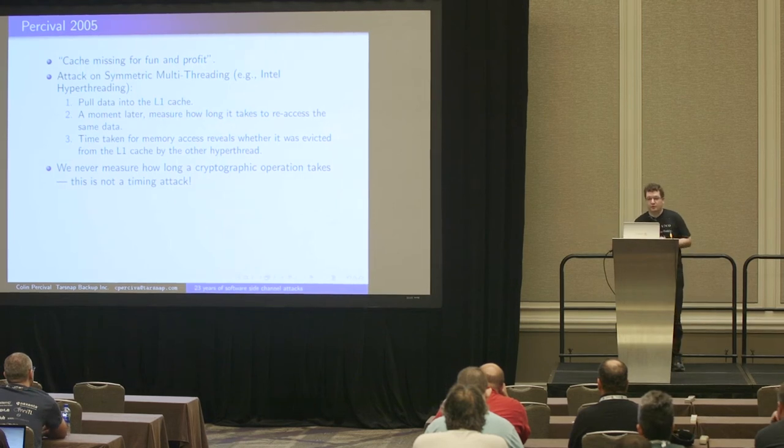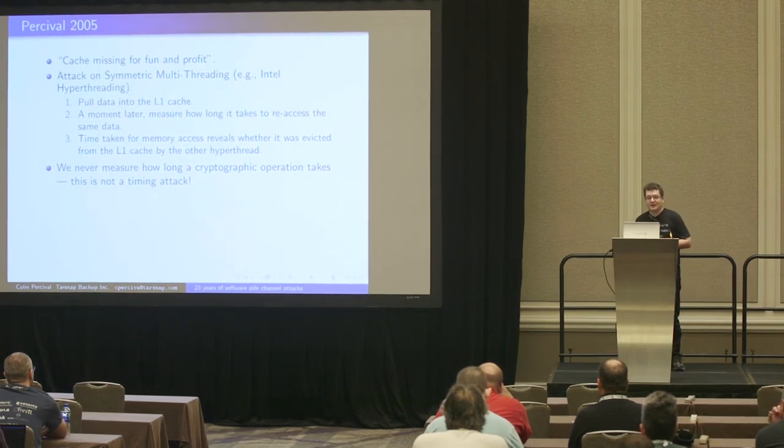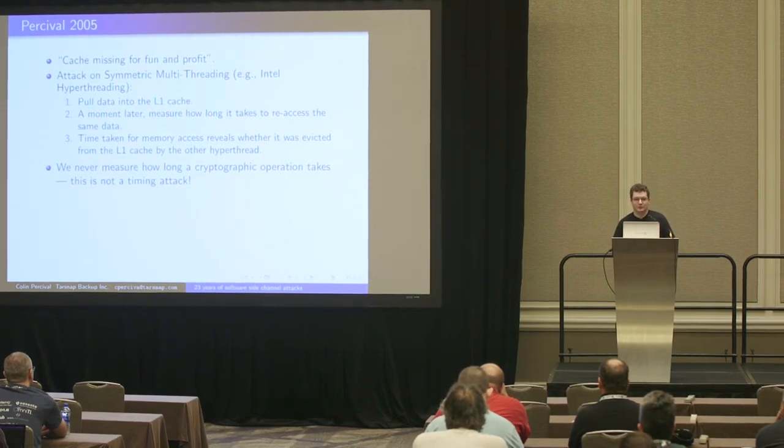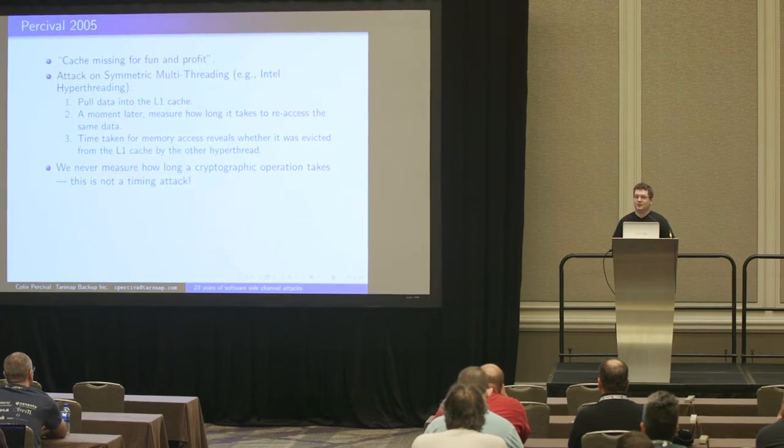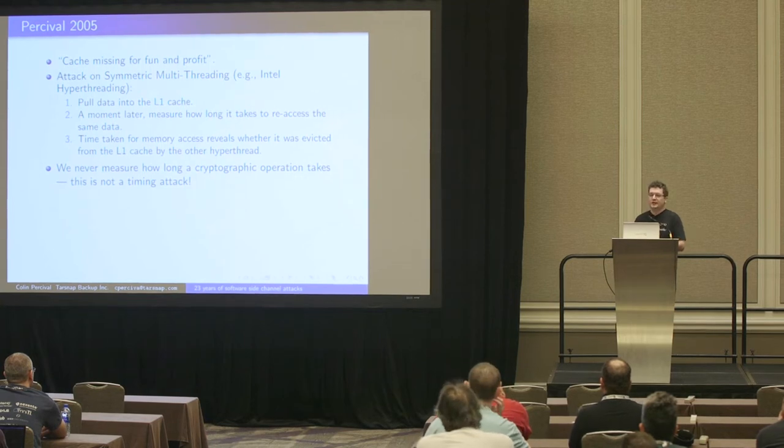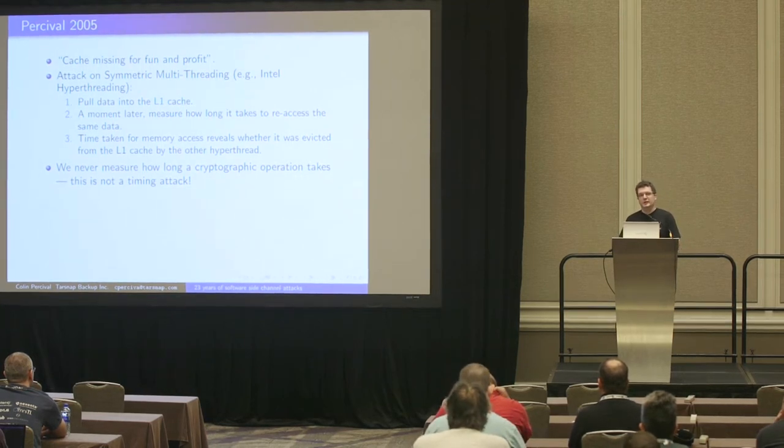The next year, this is my contribution to this talk. At BSDCAN 2005, I published this paper, Cache Missing for Fun and Profit. Thank you, Dan, for accepting the talk. I submitted this talk to Dan in December 2004. I think the title of the submission was a yet-to-be-announced security vulnerability, and the abstract was I can't tell you yet. And Dan, I guess, somehow had confidence in me. He didn't know me. I'd never been to the conference before. But he accepted the talk on the basis of I can't tell you what I'm going to be talking about.